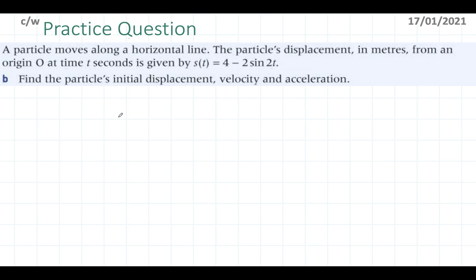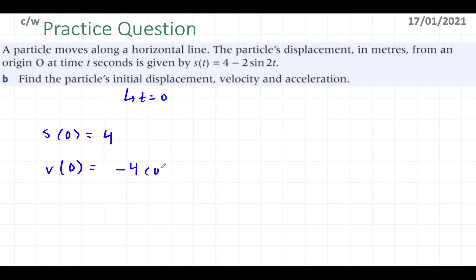The question wants the initial displacement, velocity, and acceleration. Initial always means time equals 0 — keep that as a trick. So S(0) is just equal to 4 meters. For V(0), we have negative 4 cos(2 × 0). Since cos(0) = 1, we get negative 4 × 1 = negative 4 meters per second.